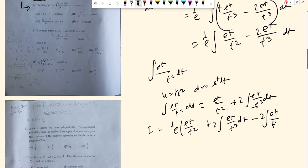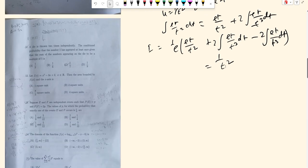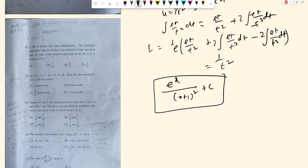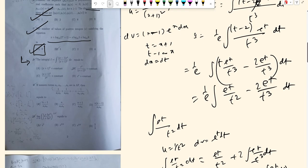Substituting back, this equals e to the power x over (x plus 1) squared plus a constant. The correct answer is option B. Thank you.